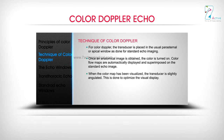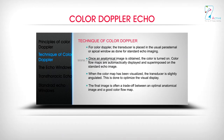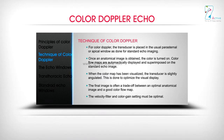When the color map has been visualized, the transducer is slightly angulated to optimize the visual display. The final image is often a trade-off between an optimal anatomical image and a good color flow map. The velocity filter and color gain settings must also be optimal.